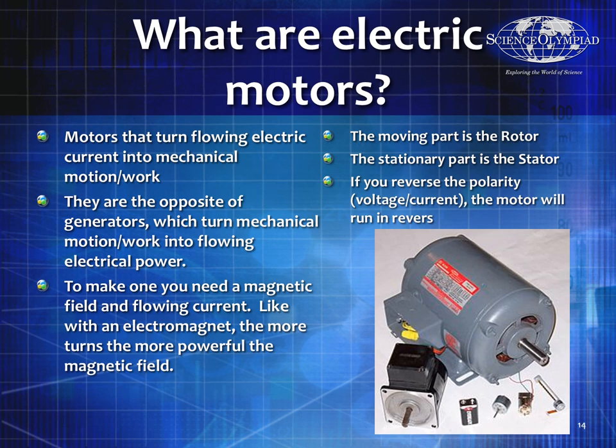If you want to use one of these for a generator, it usually works exactly the opposite — if I turn a motor, it will actually generate an electrical current. The moving part of a motor is always called the rotor for rotating, and the stationary part is always called the stator for stationary. With DC motors, if you reverse the direction of the current, you'll actually make the motor spin backwards.